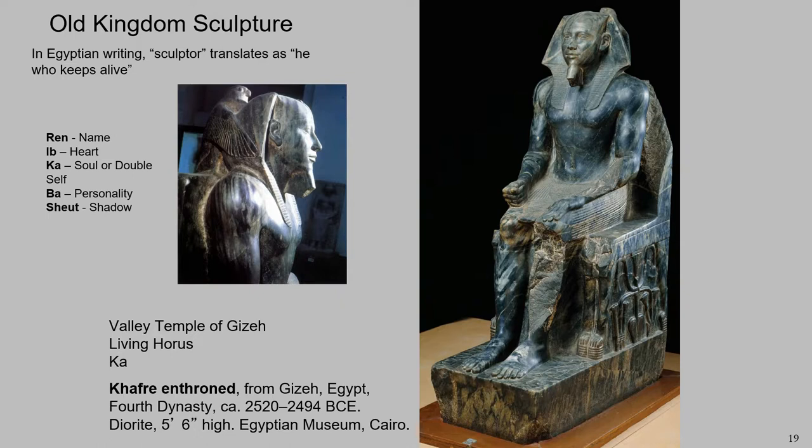This is a sculpture of the pharaoh Khafre sitting on a throne. This is made from a material called diorite, which is an incredibly strong material. It had to be imported from Mesopotamia — it is not local to Egypt. So once again, we see the use of materials here to denote wealth and power. This is not a material that would have been available to everybody, and would certainly not have been used in making artifacts related to common people.